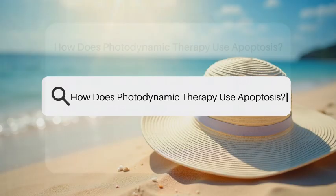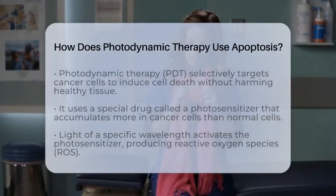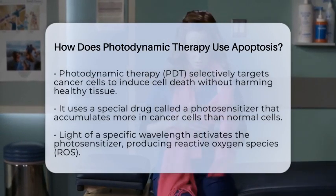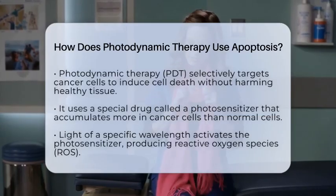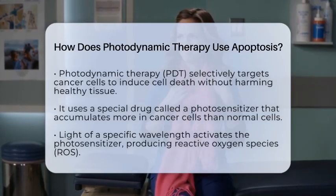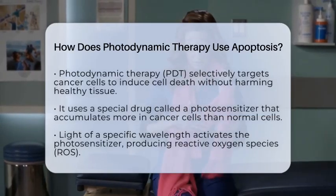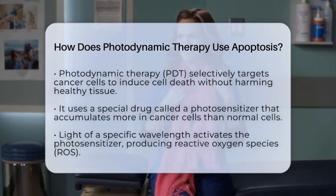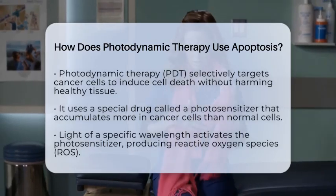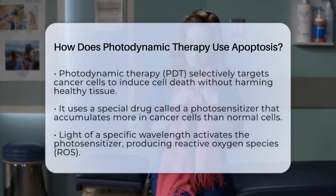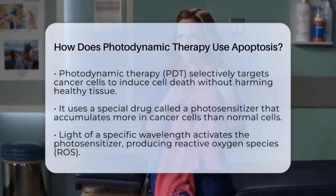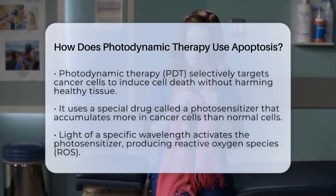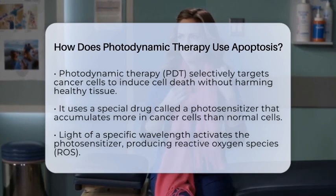How does photodynamic therapy use apoptosis? Imagine a treatment that can selectively target cancer cells and gently encourage them to die off without harming the surrounding healthy tissue. That's what photodynamic therapy does, and it uses a process called apoptosis to achieve this. Apoptosis is a natural, controlled way for cells to die, and it's essential for keeping our tissues healthy.